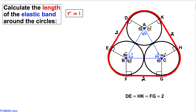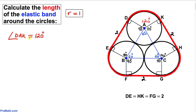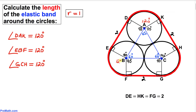For the top circle, we have two right angles of 90 degrees each and the triangle angle of 60 degrees. Since all angles around a point sum to 360 degrees, the remaining arc angle DAK is 360 − 90 − 90 − 60 = 120 degrees. Similarly, angle EBF for the left circle is 120 degrees, and angle GCH for the right circle is 120 degrees.